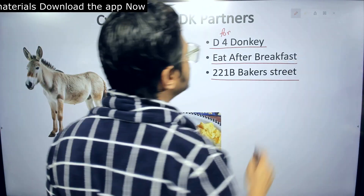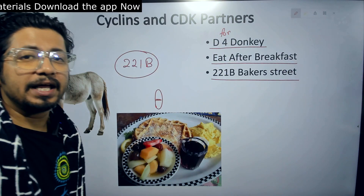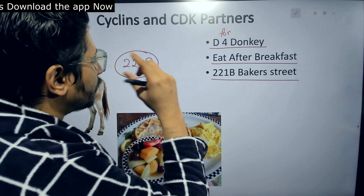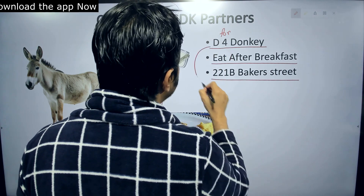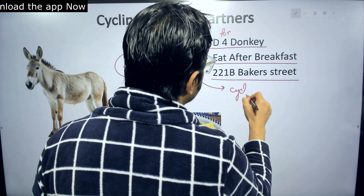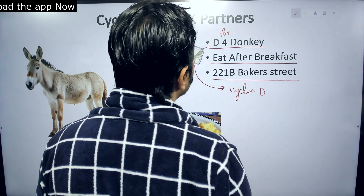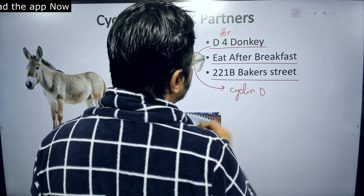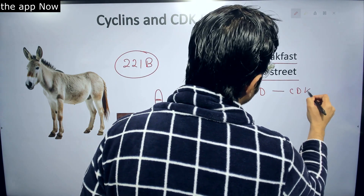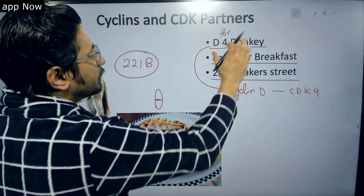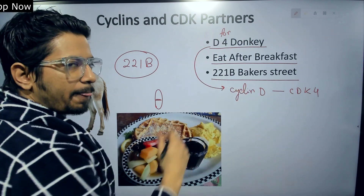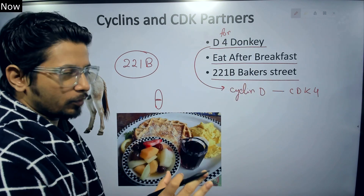If you remember these three sentences, you will never forget the cyclin and CDK partners. Here's how. We start with cyclin D — D for donkey. And 4 is the CDK partner, CDK4. So from the first sentence, we get cyclin D and its CDK partner CDK4.